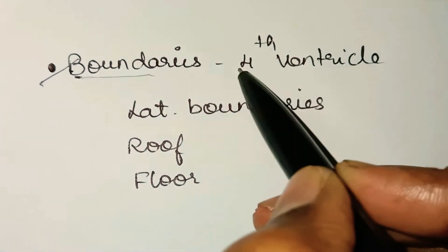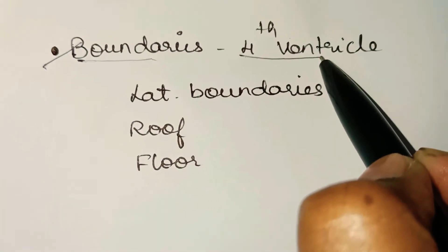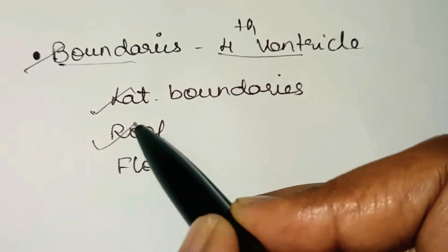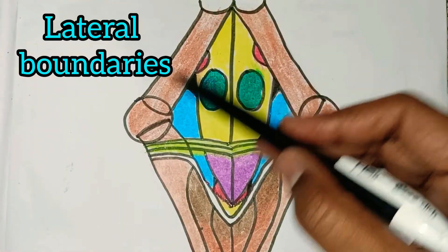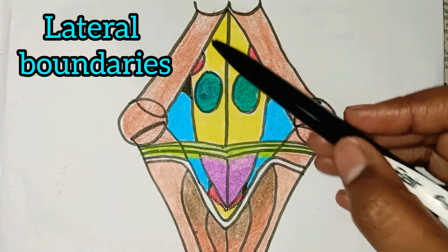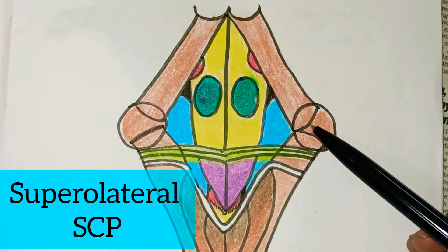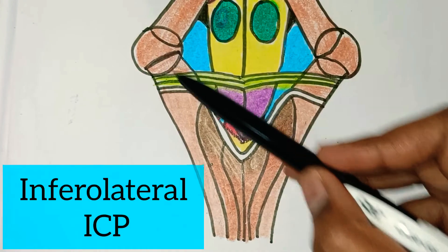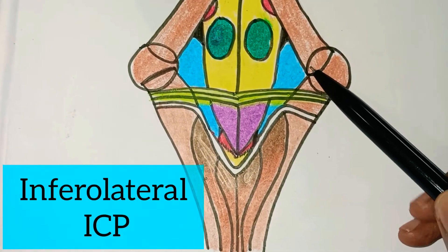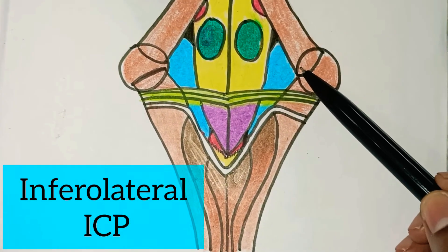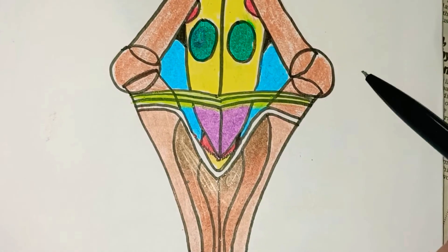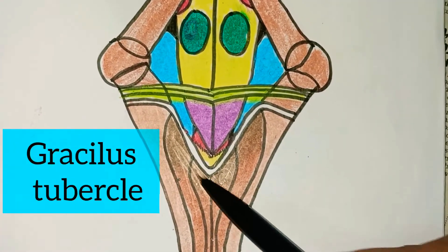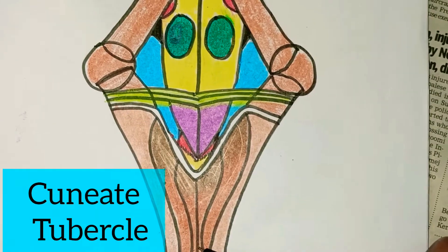The boundaries of the 4th ventricle include lateral boundaries, roof, and floor. The superolateral boundary is formed by the superior cerebellar peduncle. The inferolateral boundary is formed by the inferior cerebellar peduncle, supplemented by the gracile tubercle and the cuneate tubercle.